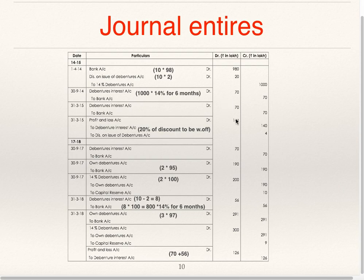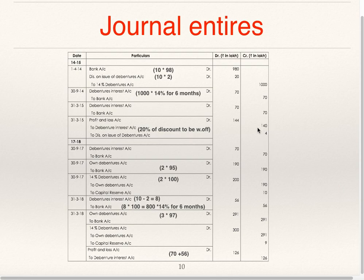On 31st March 2015: profit and loss account debit to debenture interest 140, to discount on issue of debentures 4. As given in the question, in 2014-15, 20% of discount on issue of debentures is to be written off — so 20% of 20 is 4. This 4 is to be written off, so we are transferring it to profit and loss account. Profit and loss account debit 144: to debenture interest 140, to discount on issue of debentures 4.